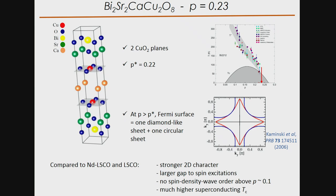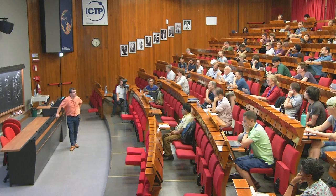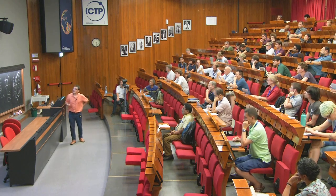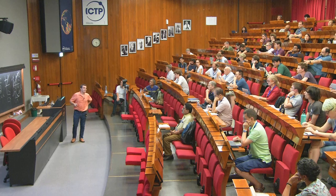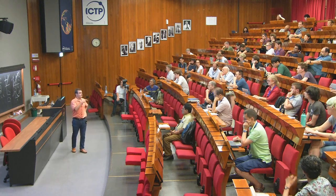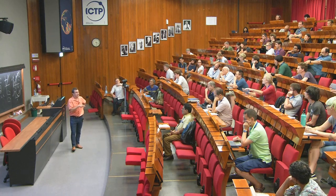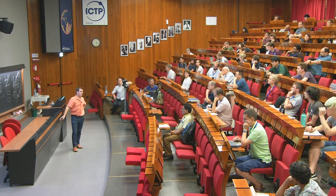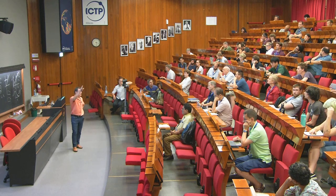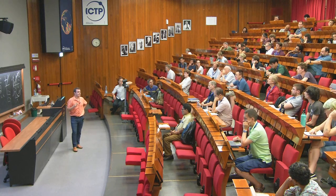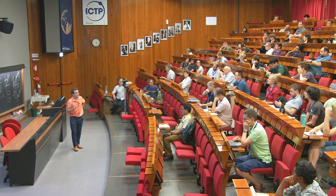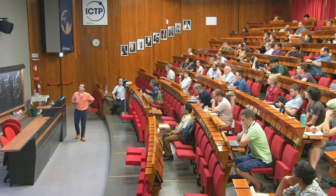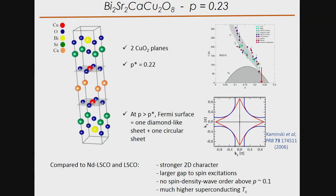What we report is precisely the same increase of slope as Nigel reported: it first increases as you are overdoped, up to or down to p*, and then it saturates. I didn't go down to the lowest doping — I will show data that stopped at 21 percent. What I will try to explain is why the slope increases when you decrease doping, and this increase is precisely the same as Nigel reported.